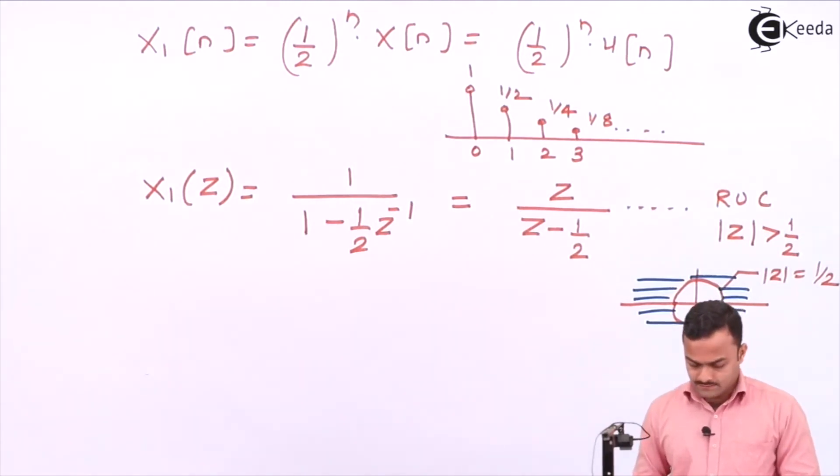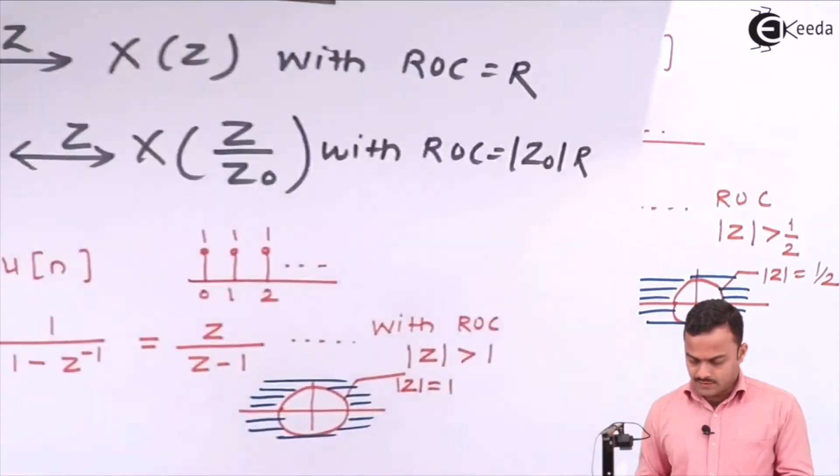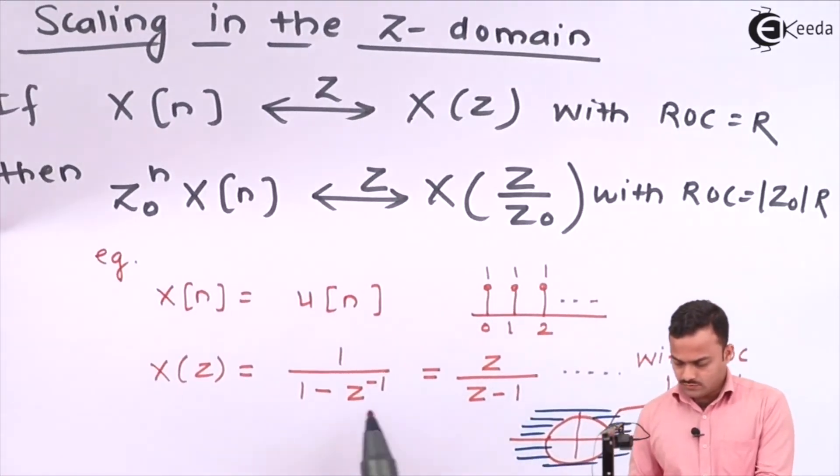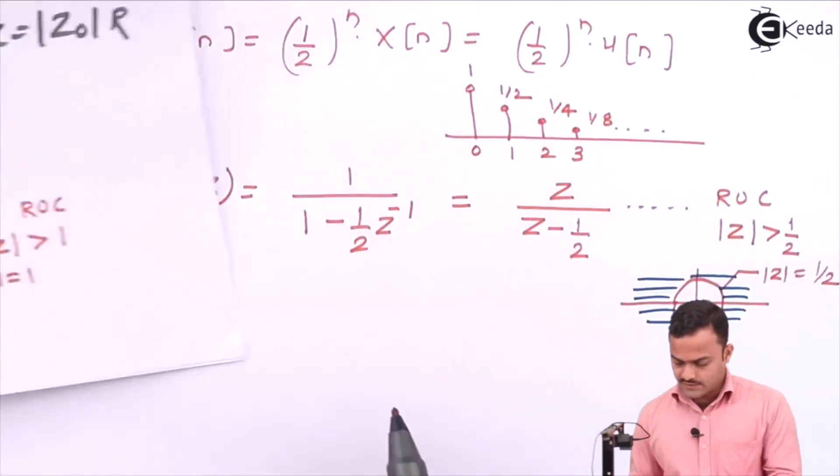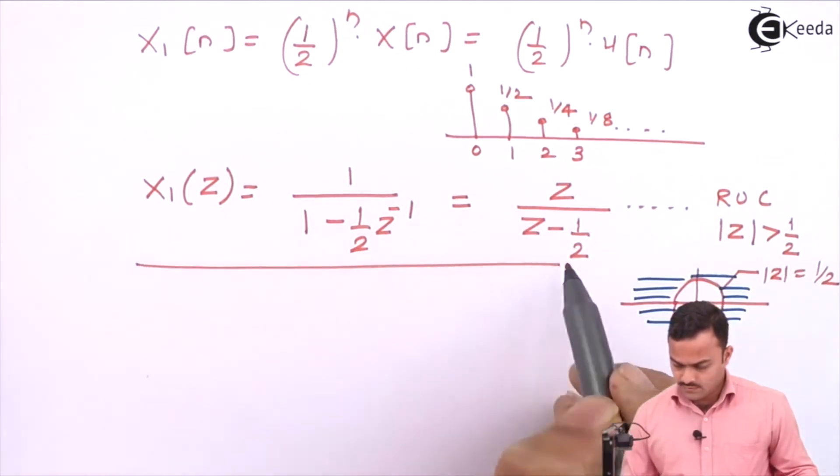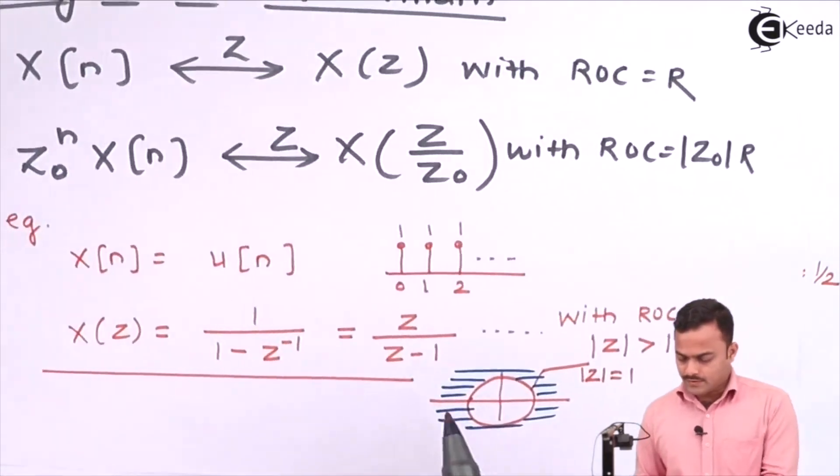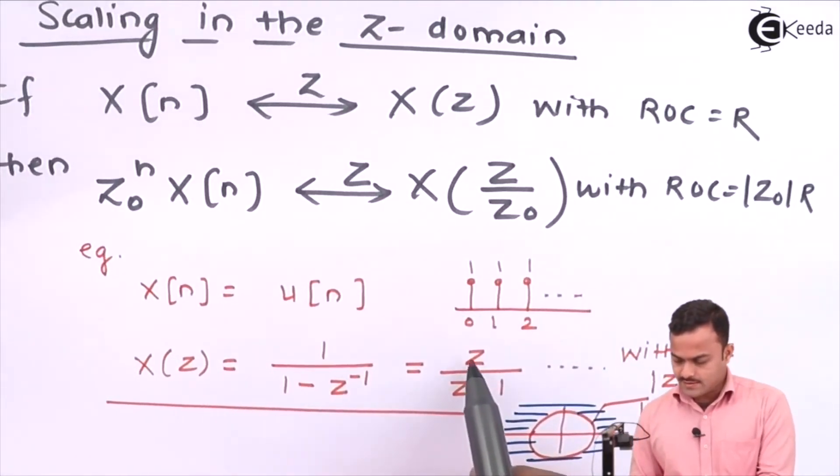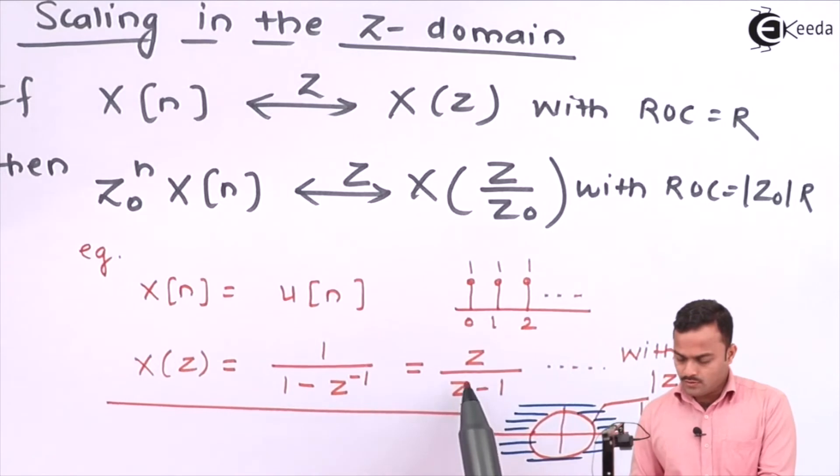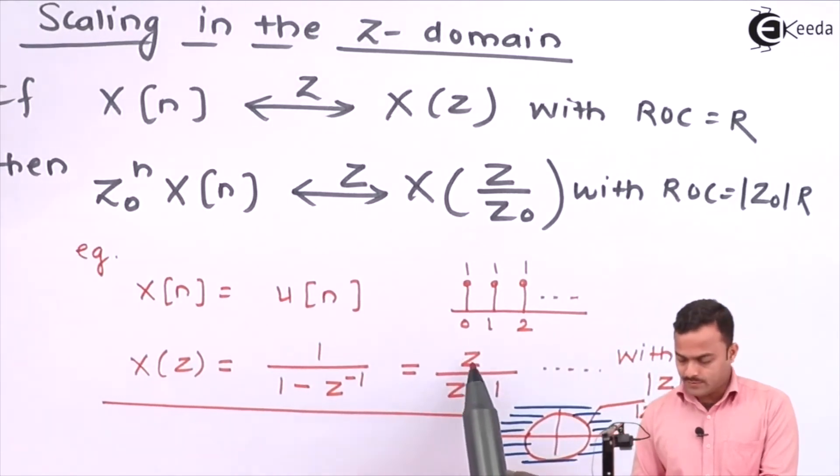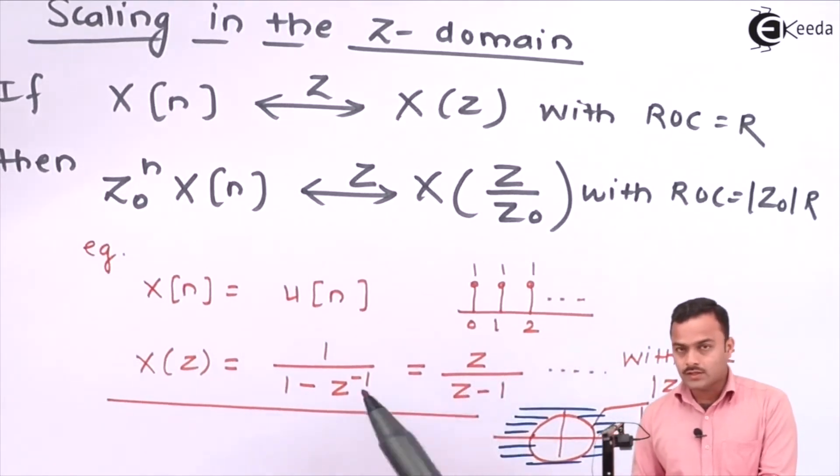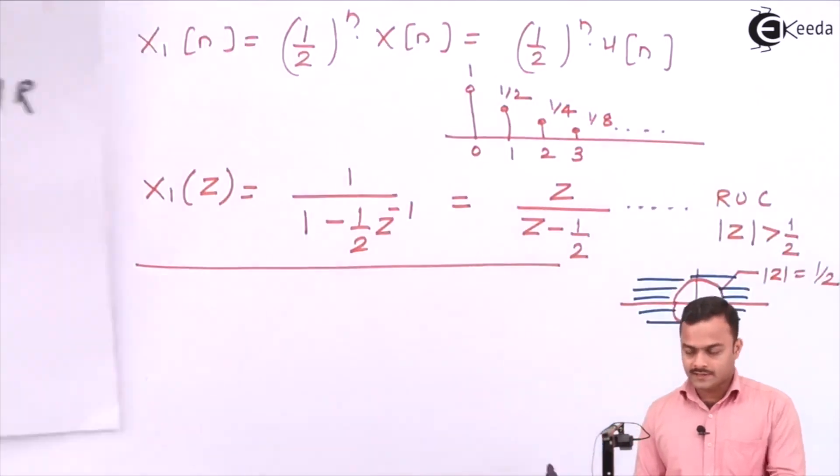The thing is, if we compare these two Z transforms, what we will come to know? If I replace here Z by Z upon 1 by 2, that means if I replace Z with 2Z, what I will get?